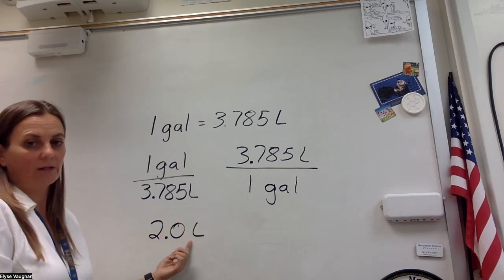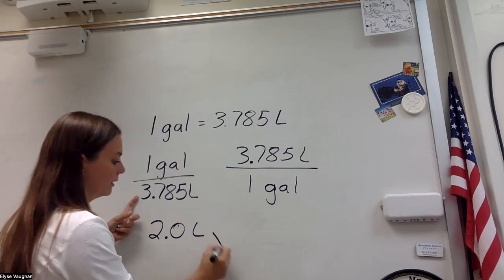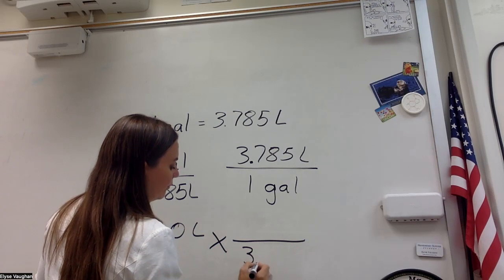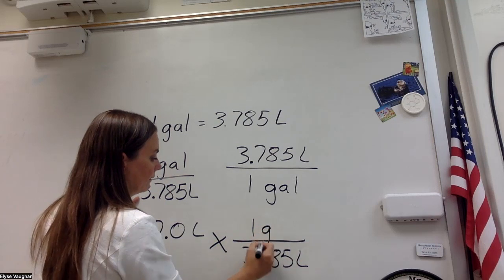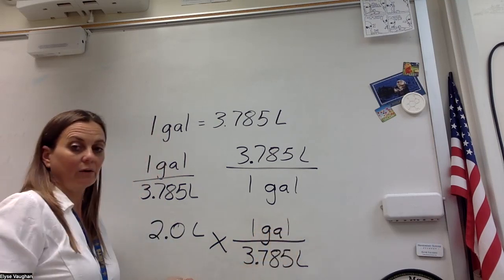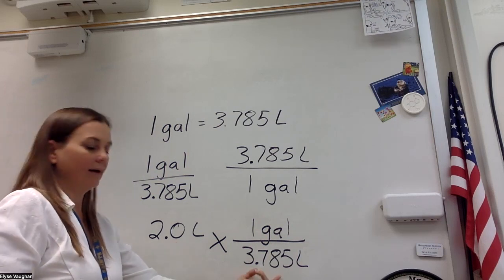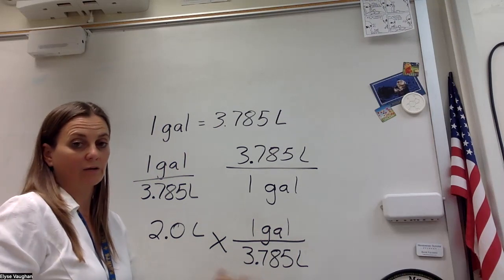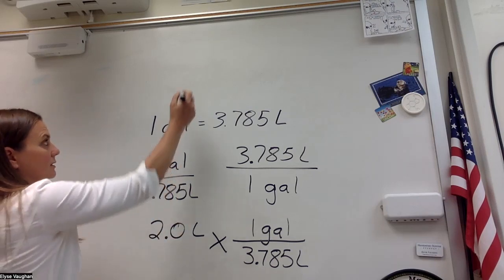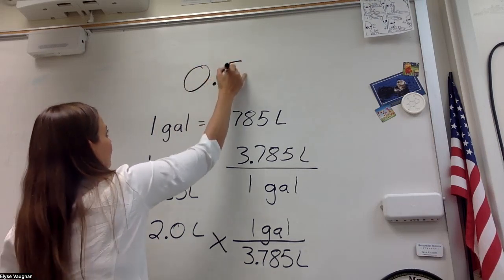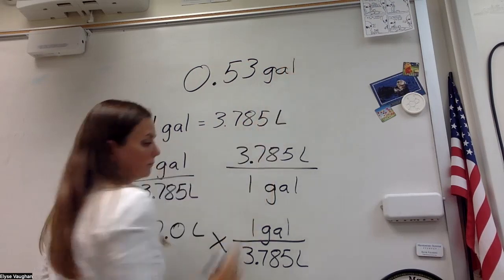I have liters here. I want to get rid of liters. So I'm going to use the conversion factor with liters on the bottom. So 3.785 liters over one gallon. And I'm going to go ahead and look at my significant figures now. I see that I have two in this number. I have an infinite number of sig figs here. So my answer can only have two sig figs. And so when I convert this, I get 0.53 gallons.